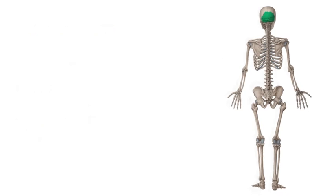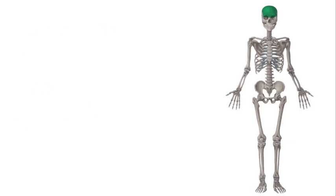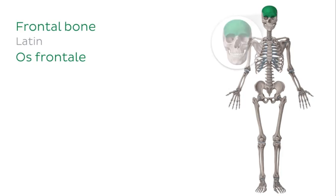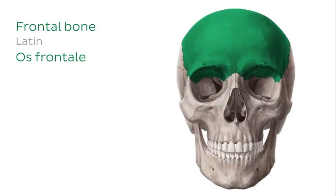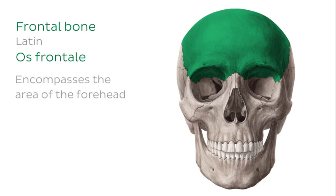Let's flip our skeleton back around so we can see the first bone of the neurocranium, the frontal bone, and zoom in a bit. As you can see, the frontal bone is situated anteriorly and it encompasses the area of the forehead.